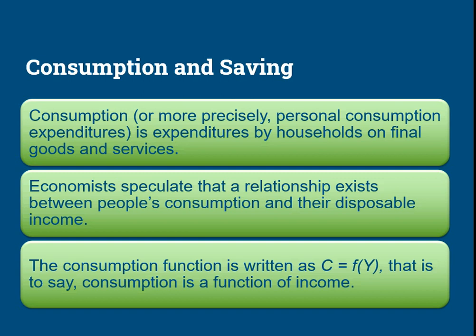We can write this relationship in this form. Here C represents consumption and f(Y) shows that consumption is a function of income. Consumption is a dependent variable while income is an independent variable. First a change occurs in income, then it affects consumption — that is why consumption is dependent and income is independent.